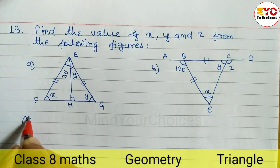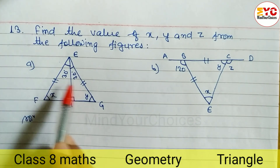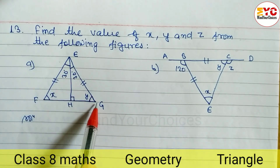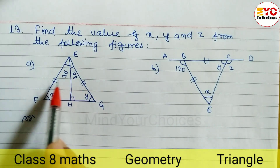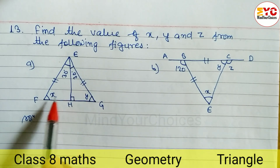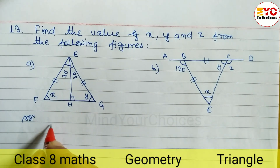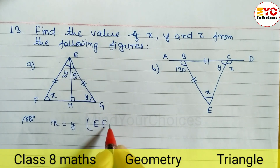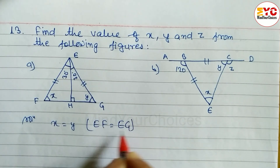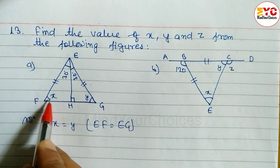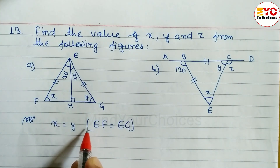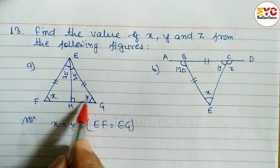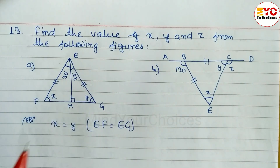Number A. You can see here we have a diagram. This is an isosceles triangle F, G, E — FGE is an isosceles triangle. You can see here the sides are also equal. It means x and y are also equal. So x is equal to y. Reason: EF is equal to EG — these two sides are equal, which means these two angles are also equal.